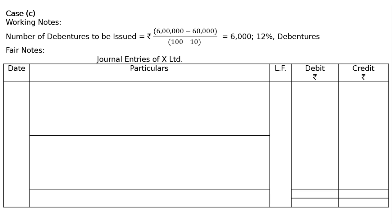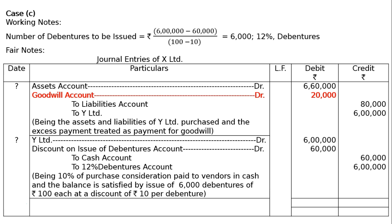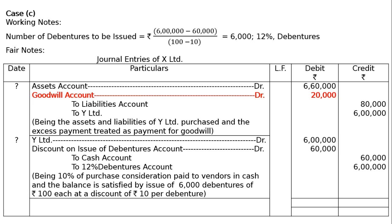Journal entries of X Ltd for Case C. First entry is common for all cases. Second entry: Y Ltd debited Rs. 6,00,000; Discount on Issue of Debentures account debited Rs. 60,000; to Cash account Rs. 60,000; to 12% Debentures account Rs. 6,00,000. Narration: being 10% of purchase consideration paid to vendors in cash and the balance satisfied by issue of 6,000 debentures of Rs. 100 each at a discount of Rs. 10 per debenture. Journal totals: debit column Rs. 13,40,000 and credit column Rs. 13,40,000 — both sides tallying. This is the final answer.